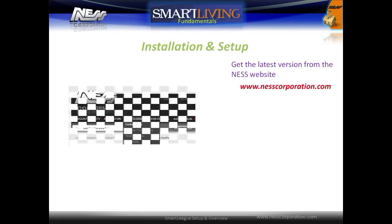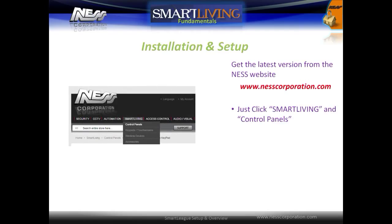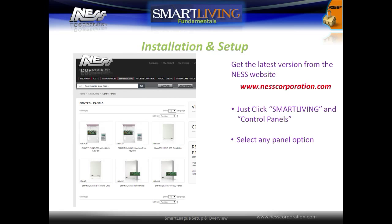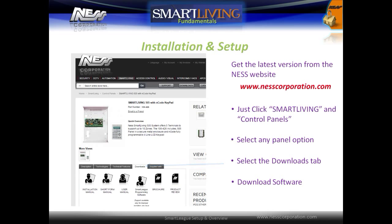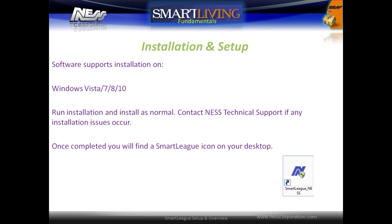The latest version of the SmartLeague software can be downloaded from the NES website. Click the SmartLeague menu and choose control panels. Select any of the panel options, then select the Downloads tab and download the software. The SmartLeague software supports all current versions of Windows. Simply run the installation and install as normal, and contact NES technical support if any problems occur. Once installed, you will find an icon on the desktop.